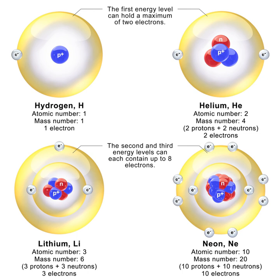Outside the nucleus, free neutrons are unstable and have a mean lifetime of 881.5 ± 1.5 s, about 14 minutes 42 seconds; therefore the half-life for this process is 611.0 ± 1.0 s, about 10 minutes 11 seconds. Beta decay of the neutron can be denoted by the radioactive decay n⁰ → p⁺ + e⁻ + ν̄ₑ, where p⁺, e⁻, and ν̄ₑ denote the proton, electron and electron antineutrino, respectively.